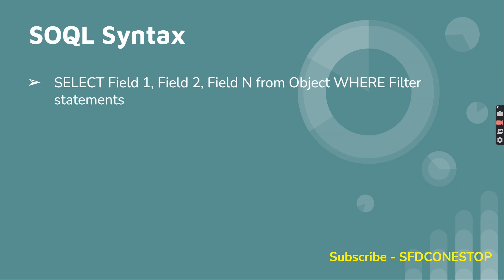Here is the very basic syntax on how to write an SOQL. You will have to use the word SELECT, then specify all the different fields you want to retrieve — field one, field two, field N — then FROM which specific object you want to fetch the information. In Salesforce you have objects — custom objects and standard objects, like the standard object Account, or a custom object like Inventory. Then you can use a WHERE clause or filter conditions.